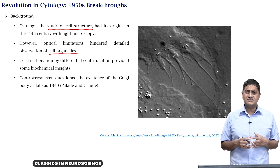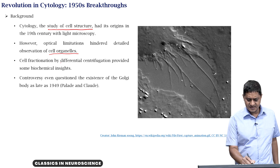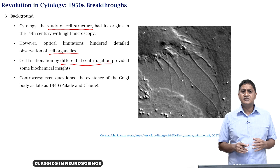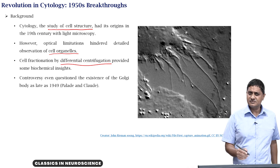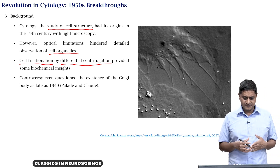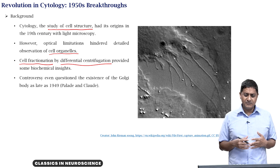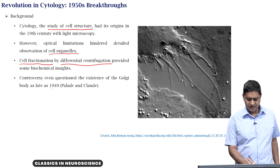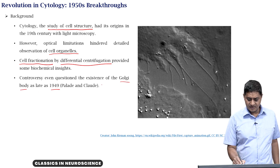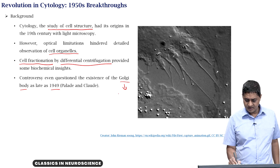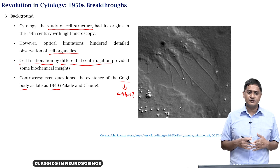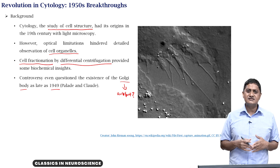This situation can be improved by techniques such as differential centrifugation, which shows different organelles differently using a method called cell fractionation. This provided some insights, but still even as late as 1949 or the late 1940s, whether the Golgi body is real or is it an artifact was debated. It was suggested by some people that it is just an artifact of light microscopy.